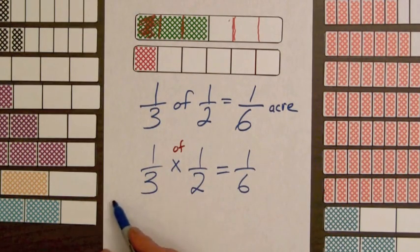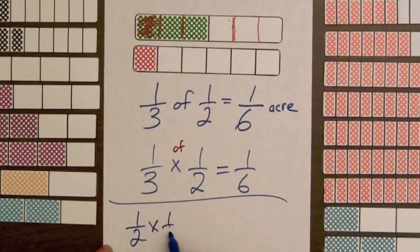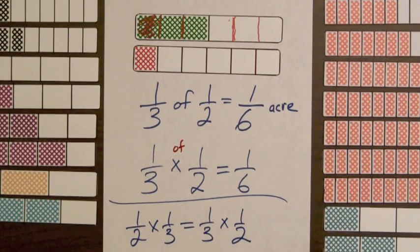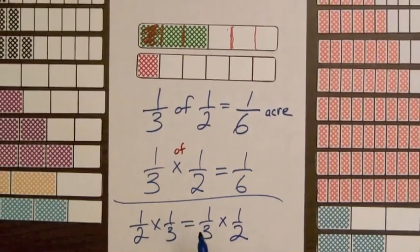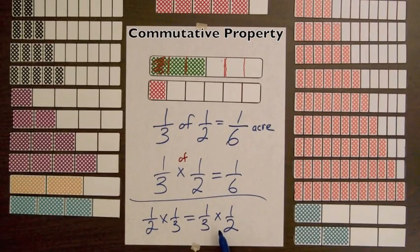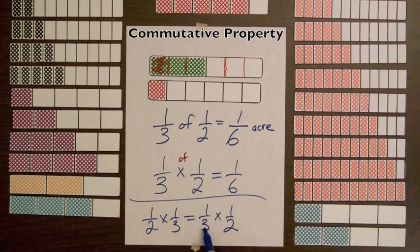With these two illustrations, we have shown that one-half times one-third is equal to one-third times one-half, because they both equal one-sixth. And it is interesting that the commutative property for multiplication holds here, because in one case, we took a half of one-third bar, and in the second case, we took one-third of the shaded amount of one-half bar.